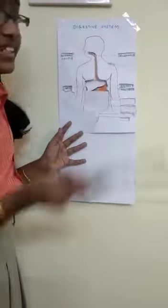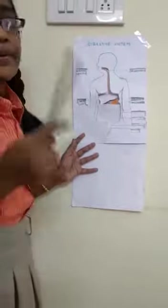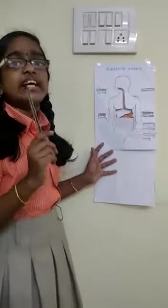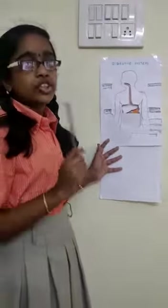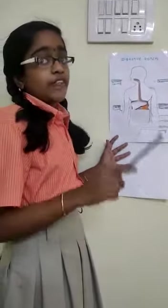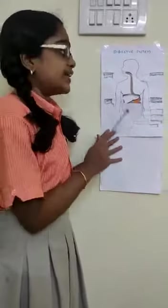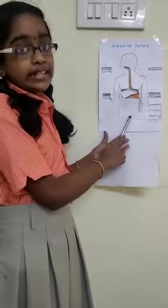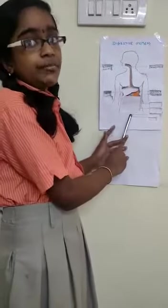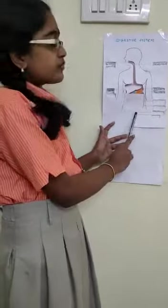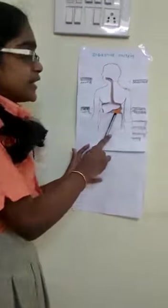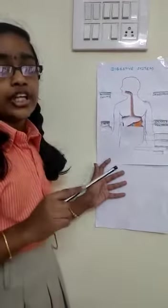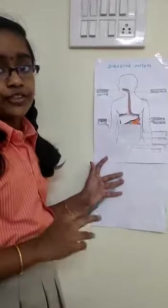What do these do? Mucus helps in protecting the inner lining of the stomach. Hydrochloric acid helps to kill the bacteria from the food. The digestive juices help to act on proteins from the food.